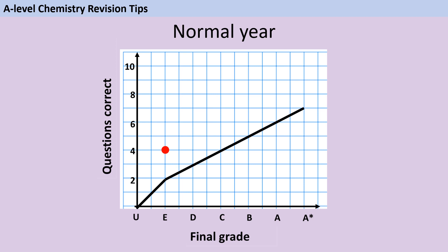At the other end of the scale, students who we would expect to get A stars are people who started their revision really early and have been really thorough throughout. So knowing what's going to be on the paper isn't really going to make a huge amount of difference, because they've already revised really effectively. The thing stopping them from getting 10 out of 10 isn't not knowing what's on the paper — it's working through questions quickly enough or figuring out the analysis side of things. There's going to be far less of an advantage for those top candidates than for candidates who usually score lower marks.